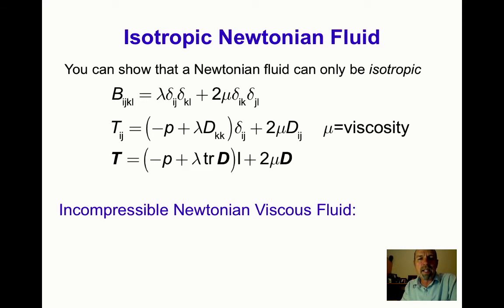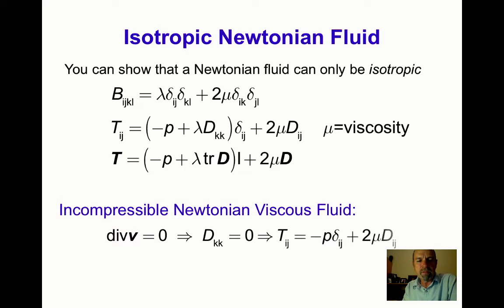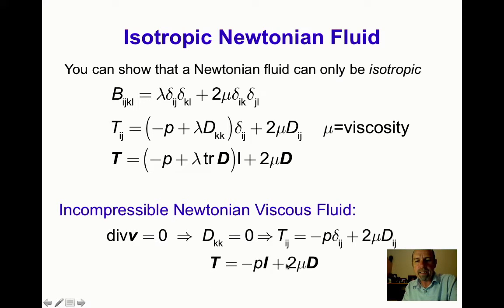For an incompressible Newtonian viscous fluid, this further simplifies by using the fact that div V, or D_kk, equals zero. So that term disappears and we're left with T_ij equals minus P delta_ij plus 2 mu D_ij, or in direct notation: T equals minus P times I plus 2 mu times D.